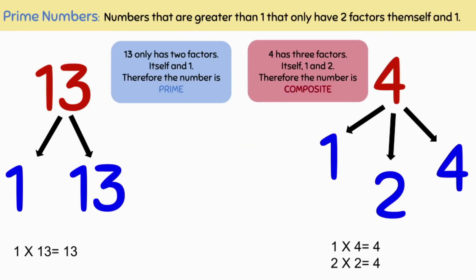Let's have a closer look at these two numbers. You can see that 13 only has two factors, itself and one. Therefore, the number is prime. Four has three factors, itself, one, and two. Therefore, the number is composite.